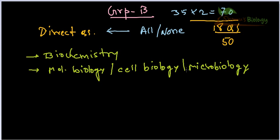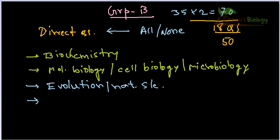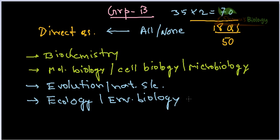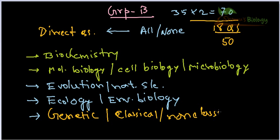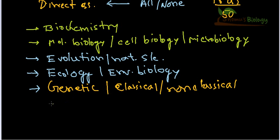The third topic you need to learn is evolution and natural selection. After that, you also need to learn ecology, environmental biology — a very hot topic nowadays with many questions. You also need to learn genetics, both classical Mendelian and non-classical genetics. Genetics is entirely conceptual — you can't just memorize it, you need to truly understand it.